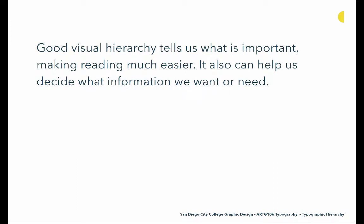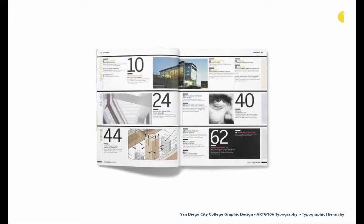Good visual hierarchy tells us what's important, making reading much easier. It can also help us decide what information we want or need. Menus really allow us to select what information we want to look at, but so do tables of contents. Table of contents spreads in magazines and books really allow us to jump ahead, so they need to be laid out in a way that helps us establish and understand what we want to look at. Here's a great example — there are large numbers calling out stories or specific articles this magazine wants to make sure we read, plus a prioritization of others at a smaller scale.